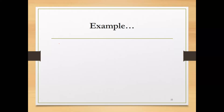The first multiplier is HM, the horizontal multiplier. That is equal to 25 over H. H was 45, so it will be 25 over 45, which equals 0.56.